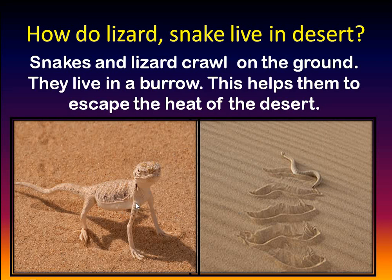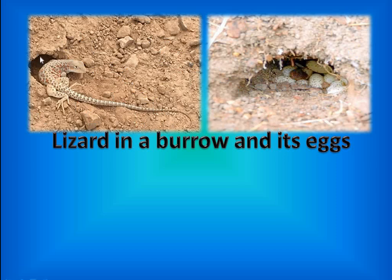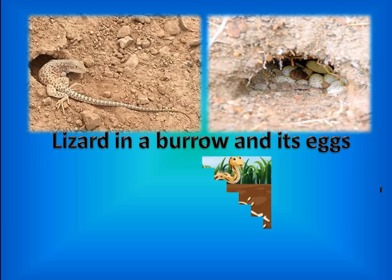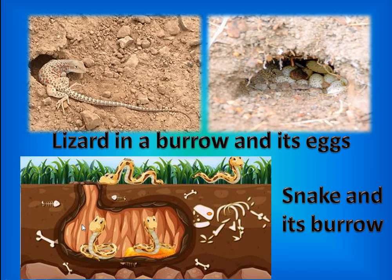Snake and lizard both live in burrows — a home under the earth. A lizard makes its home underground, and it lays its eggs underground too. When it is very hot in the desert, all types of lizards hide in the burrows. Similarly, a snake makes a burrow for itself, lays its eggs, and stays inside. The earth is cool inside, so the snake is able to protect itself from heat.